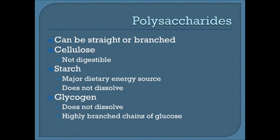Plants store starch as amylose or amylopectin, and humans have enzymes that can break down that starch into glucose, making it a usable form. Starch is a major dietary energy source and does not readily dissolve, which is why we need enzymes called amylases. Glycogen is our normal storage form of glucose, stored in muscles and liver, existing in branched chains. When blood sugar drops during fasting, glycogen is released and broken down into usable glucose for energy.